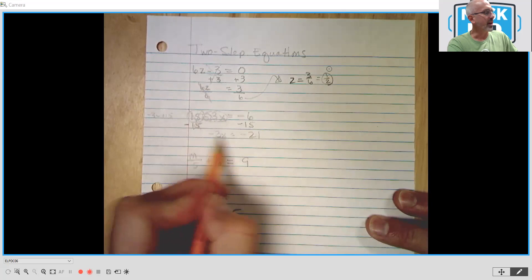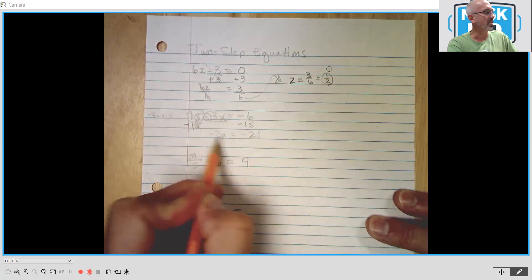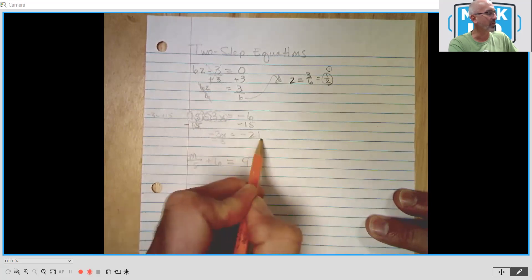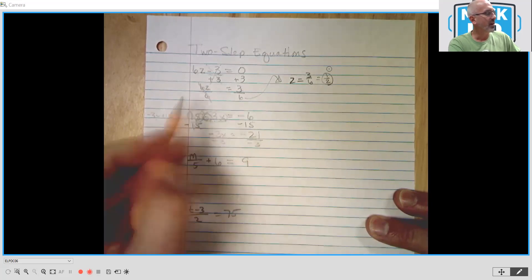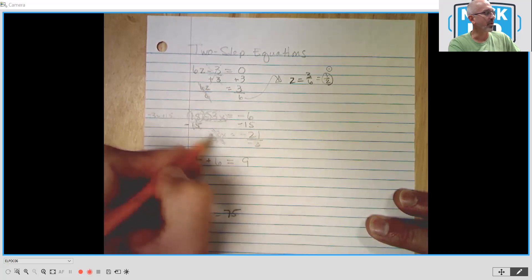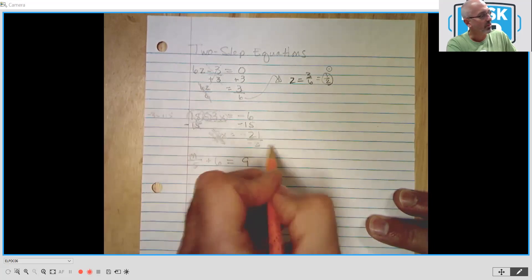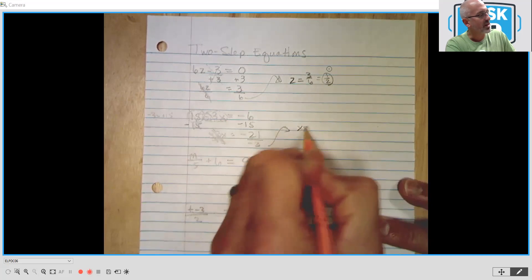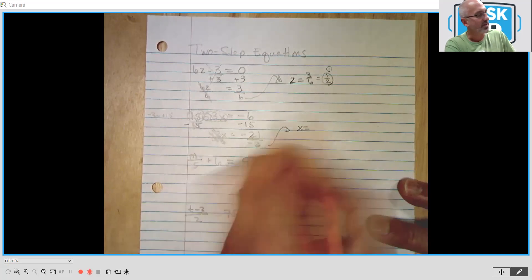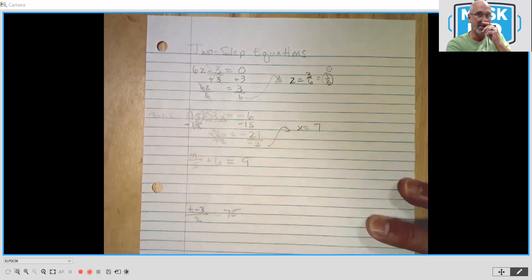Now to get rid of the negative 3, negative 3 times x, we're going to divide by a negative 3. This drops off, both negative 3s. x equals negative 21 divided by negative 3. So a negative divided by a negative is positive. So we have a positive 7.